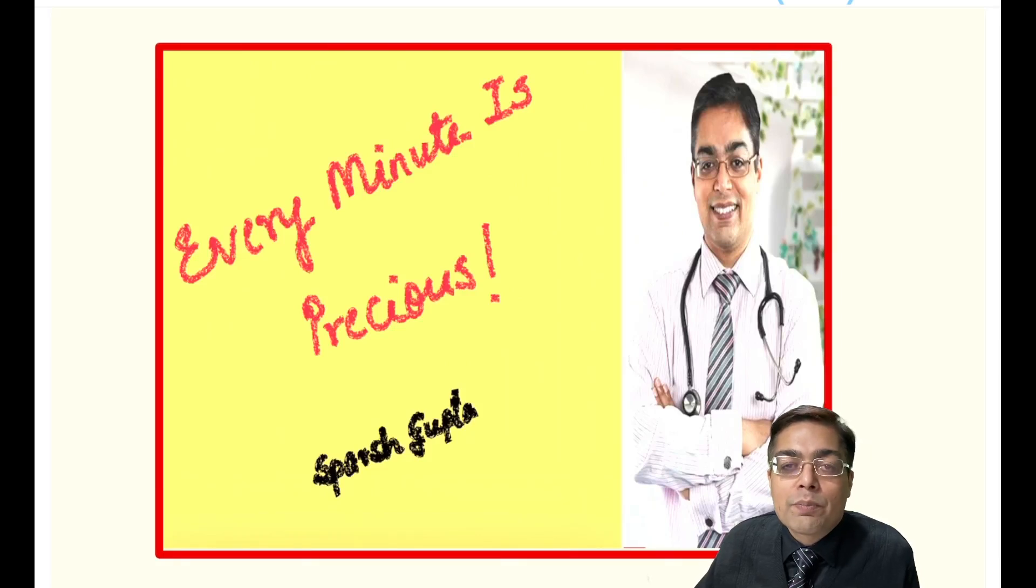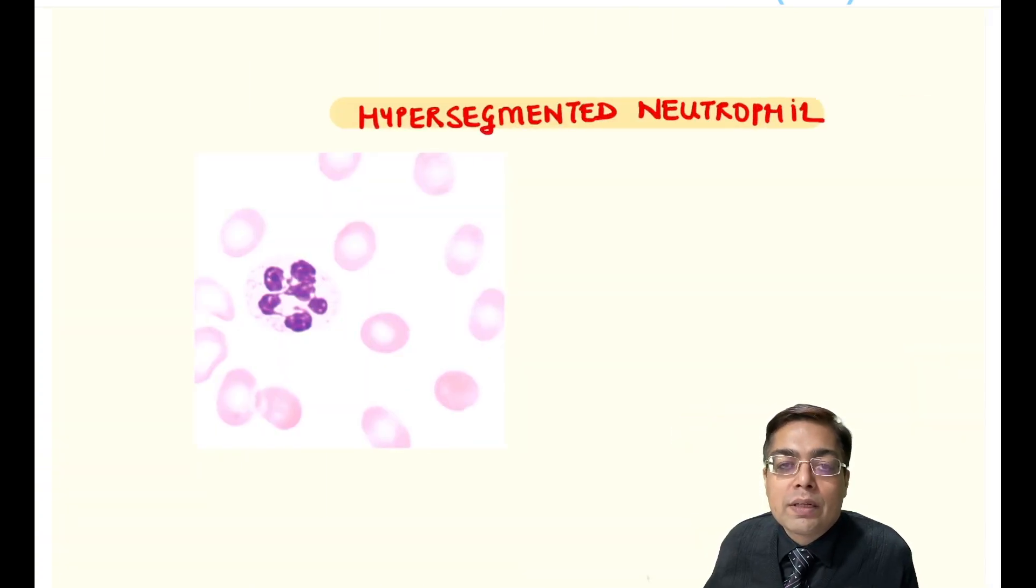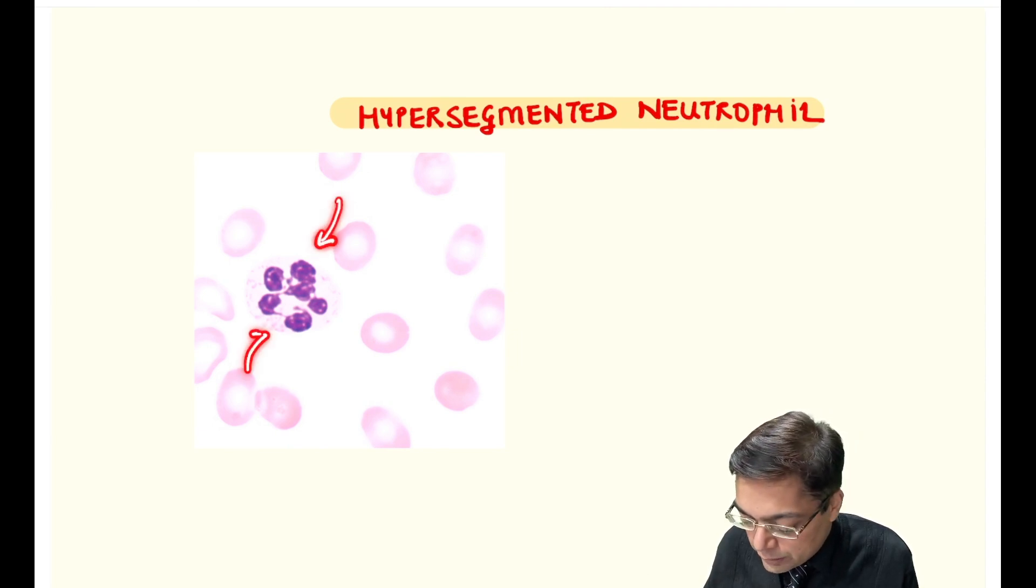Hi friends, today every minute is precious fact. When you look at the peripheral smear given here, you find a neutrophil with multiple nuclear lobes.